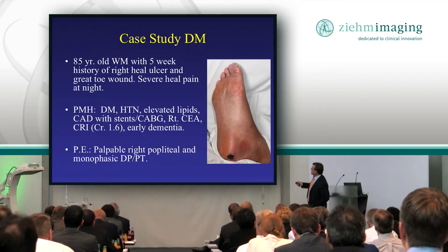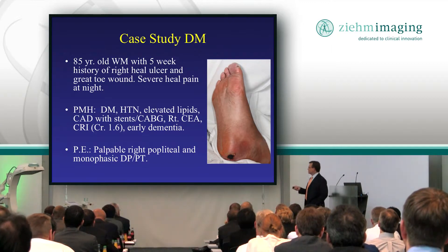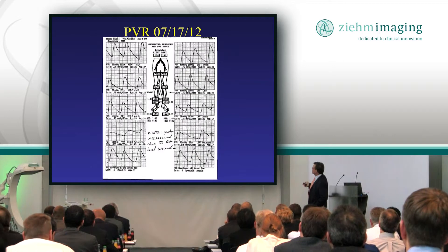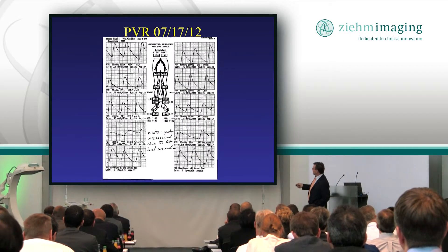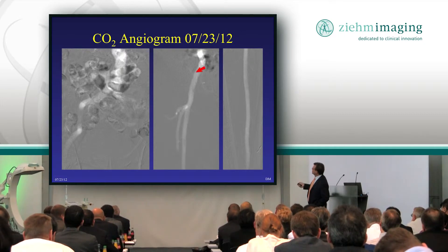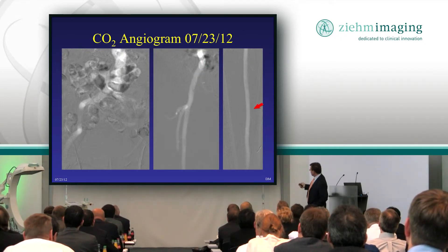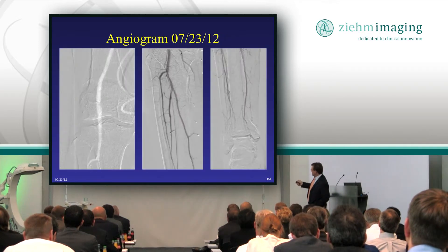So this 85-year-old has a creatinine of 1.6. He has a wound on his heel — I hope everybody has a strong stomach. The blood flow drops off in his midfoot, and we did a CO2 angiogram. You can see we see the vessel pretty well: the superficial femoral, the popliteal, just to the tibials.